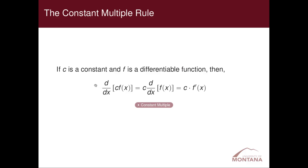Let's take a look at a constant in front of a function. The derivative of a constant times a function — if f is differentiable — yields the constant times the derivative of the function itself, or c times f prime of x. Literally, you can take a constant out in front and then differentiate the function itself, leaving the constant multiple out in front.